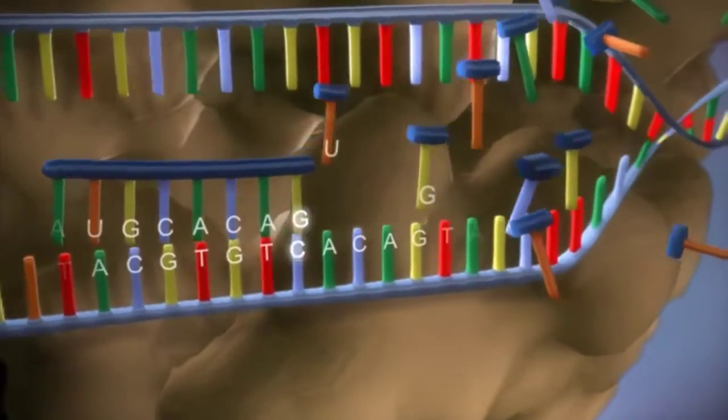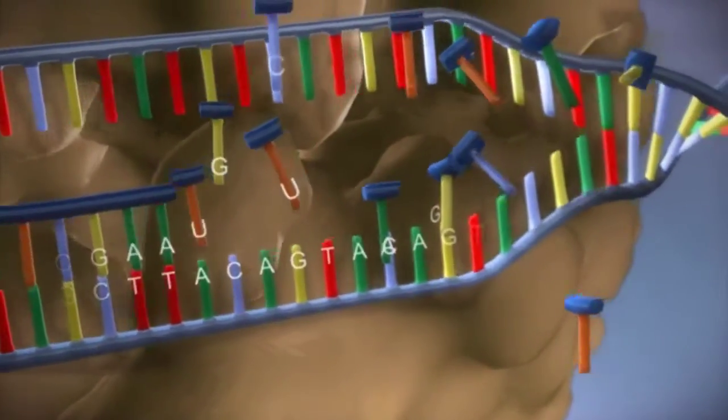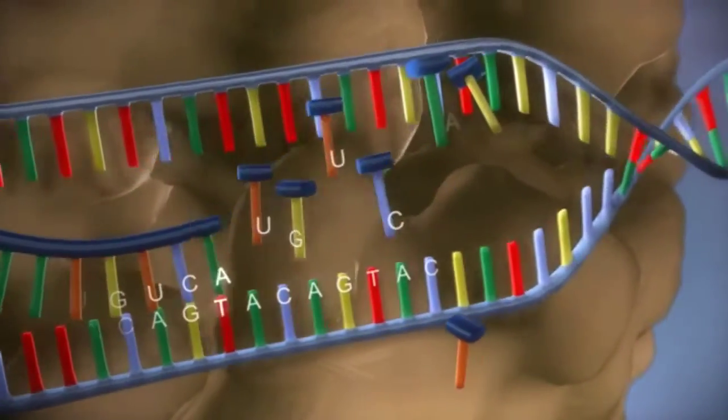The DNA code determines the order in which the free bases are added to the messenger RNA. This process is called transcription.